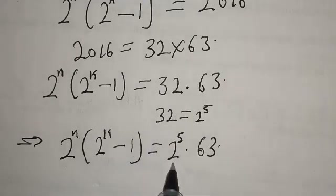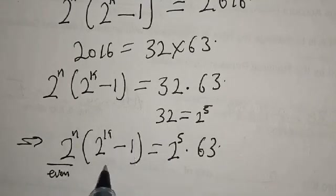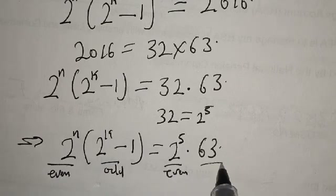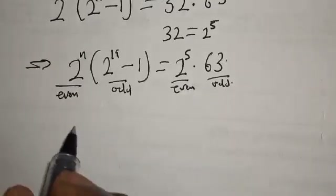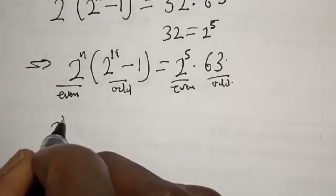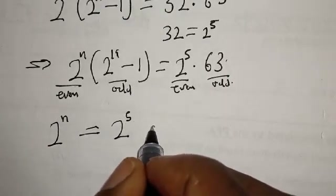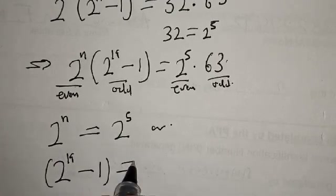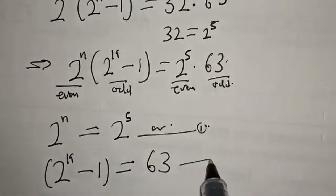From here we can see that 2 raised to power n corresponds to 2 raised to power 5, and 2 raised to power k minus 1 corresponds to 63. Notice that 2 raised to power n is even, and 2 raised to power k minus 1 is odd, while 2 raised to power 5 is even and 63 is odd. Comparing these, this is our first case and second case.